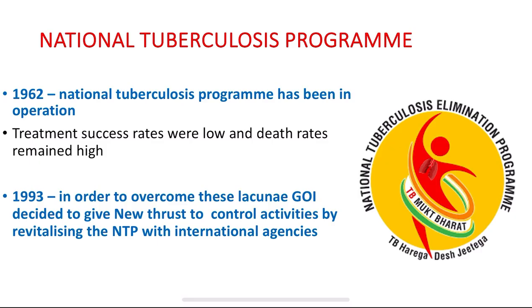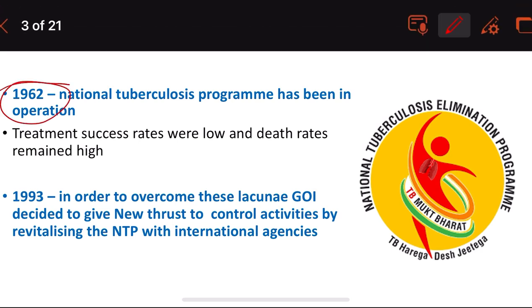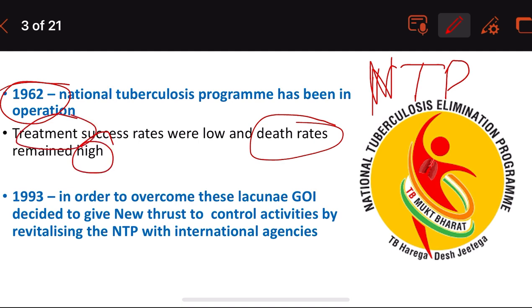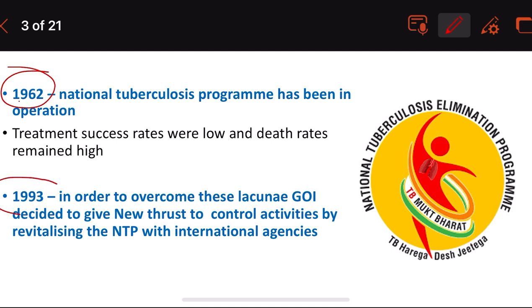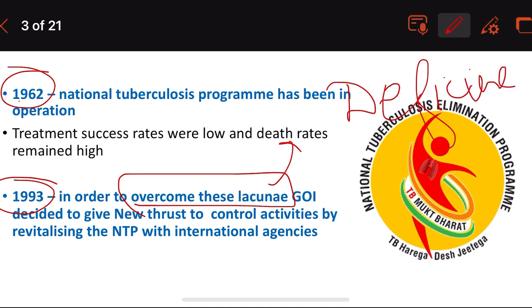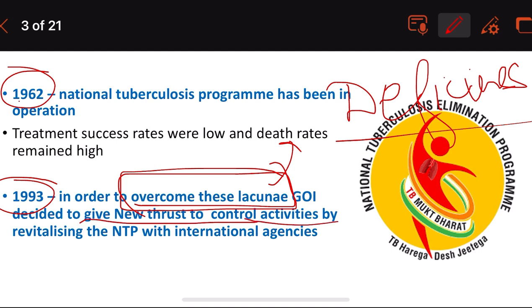The National Tuberculosis Program (NTP) has been in operation since 1962. However, the treatment success rates were unacceptably low and the death rates were very high. As a result, the Government of India decided in 1993 to overcome these lacunas — that is, the deficiencies — by giving a new thrust to the control activities and revitalizing the national tuberculosis program with international agencies.